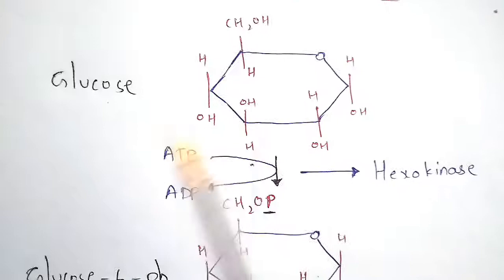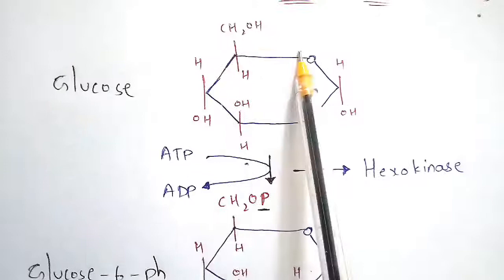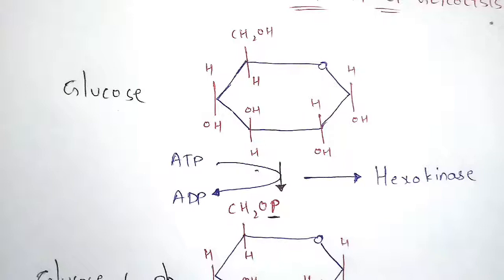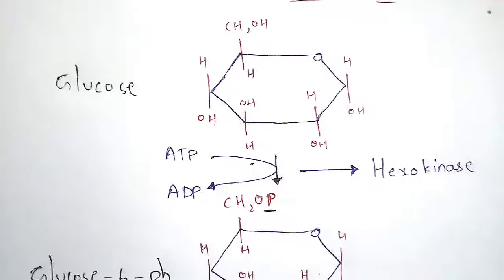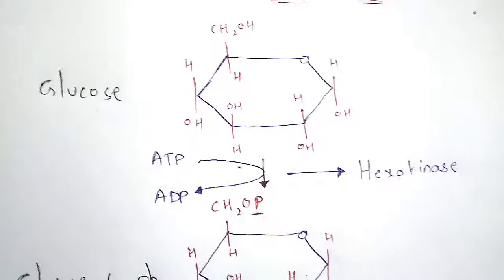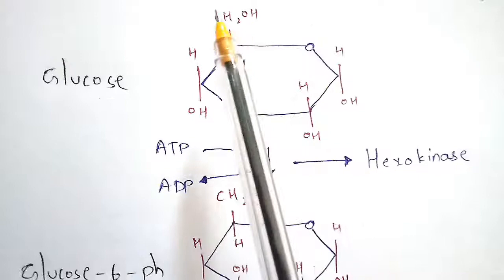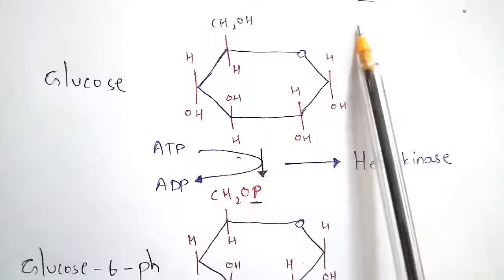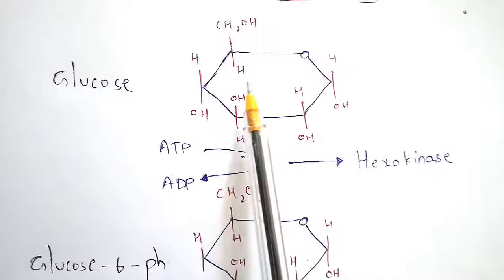The glycolysis pathway starts with glucose. Here, this is the cyclic structure of glucose, which is normally formed from the linear structure. The formation of the cyclic structure has been explained in my previous video on carbohydrates. We know that there are totally six carbons in glucose, and each carbon consists of its appropriate hydroxyl (OH) group.